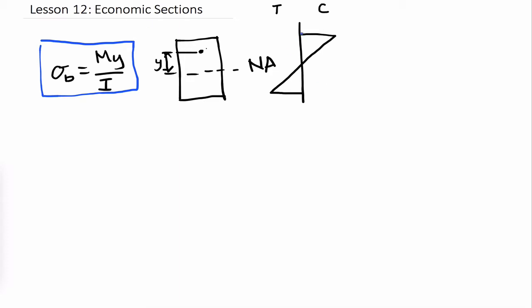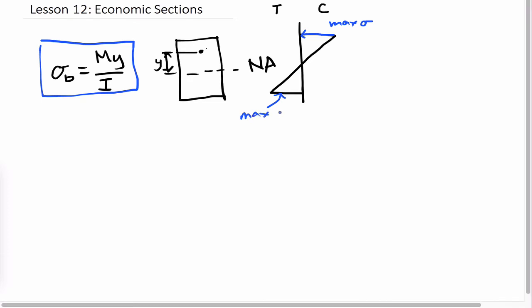And as you can see, the maximum compression stress occurs at the outermost fiber away from the neutral axis, and also the maximum tension stress. These stresses occur at the outermost fibers of our beam.